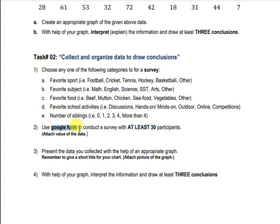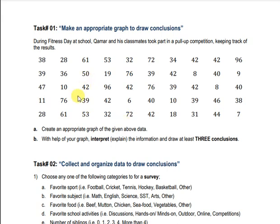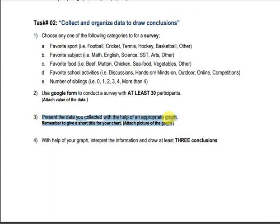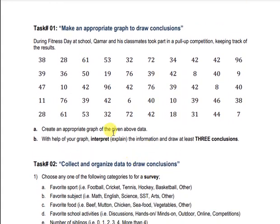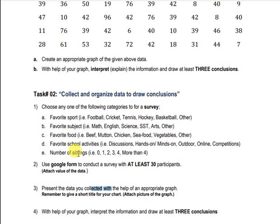I will guide you about Google Form at the end of this video. After collecting data, you will show that information in the assignment, then repeat the same process: graph the information using an appropriate graph and draw at least three conclusions. So in Task 1 the data is given and you choose the graph; in Task 2 you conduct a survey, then plot and draw conclusions.